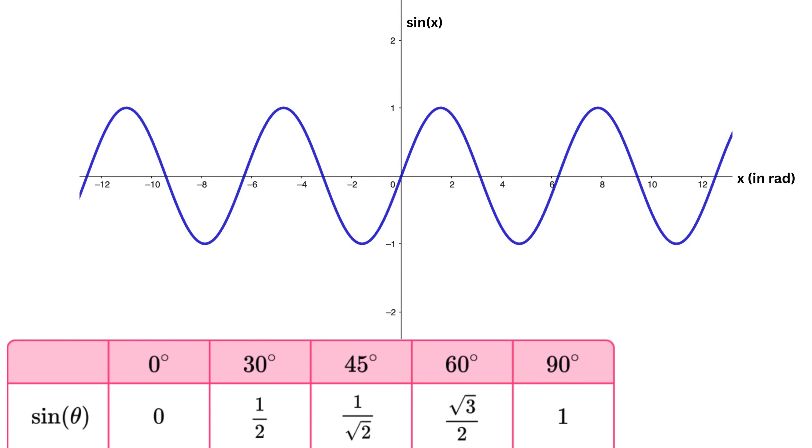As x increases, the value of sin(x) goes up smoothly until it reaches 1 at 90 degrees, then starts coming down, becomes 0 at 180 degrees, then goes negative, reaches minus 1 at 270 degrees, and comes back to 0 at 360 degrees. This whole process keeps repeating forever, so you get a wavy curve up and down again and again, and it goes on infinitely in both directions.